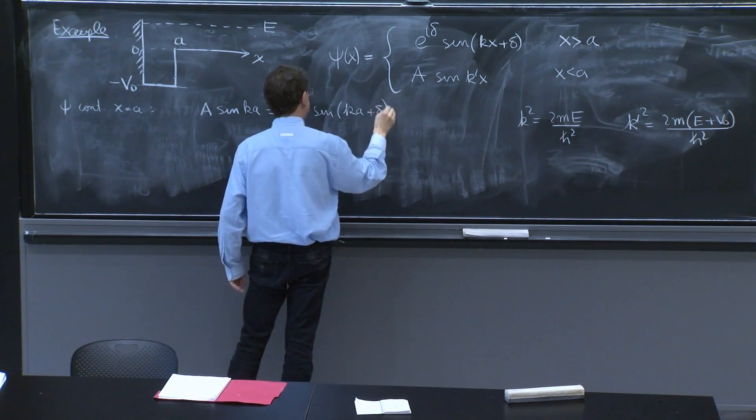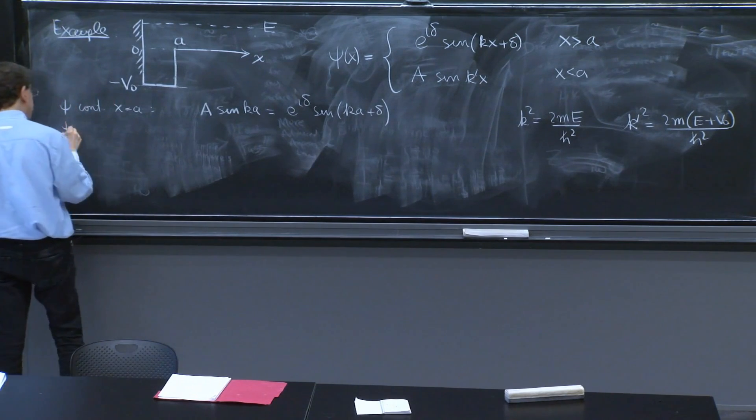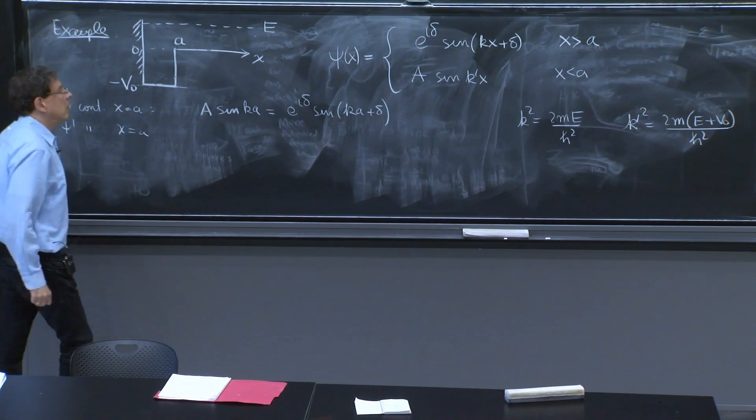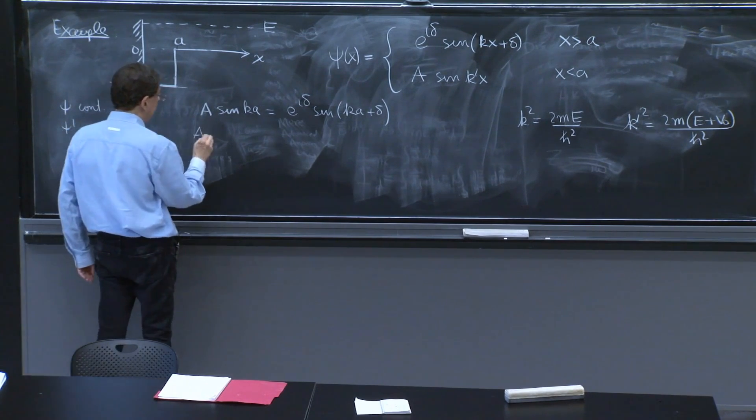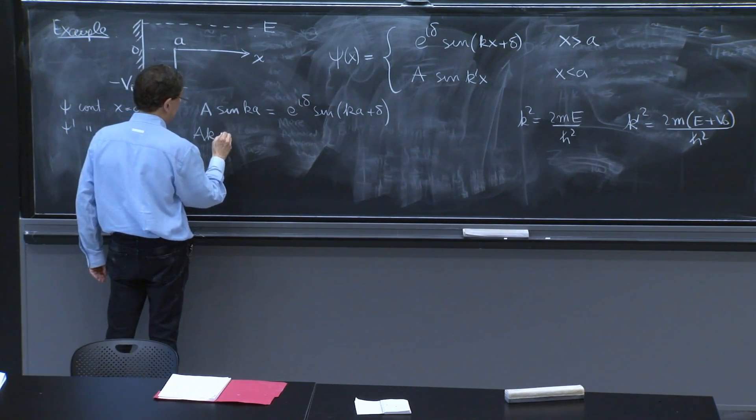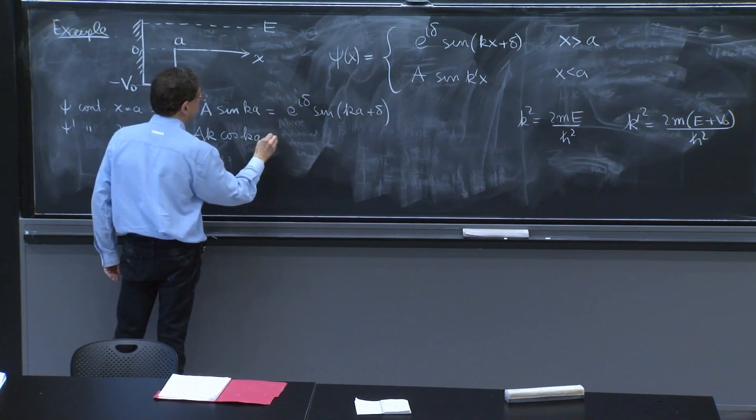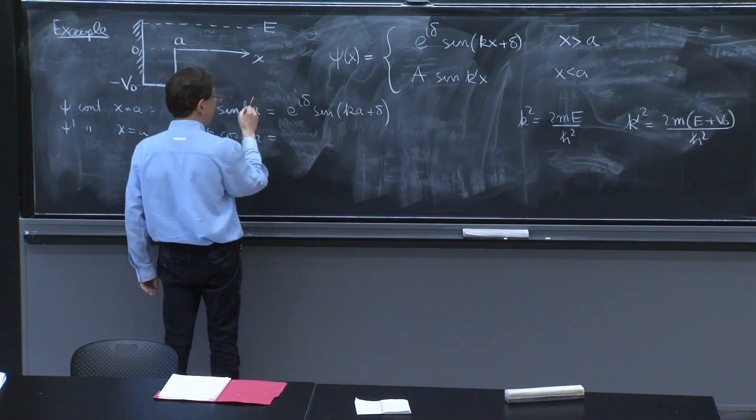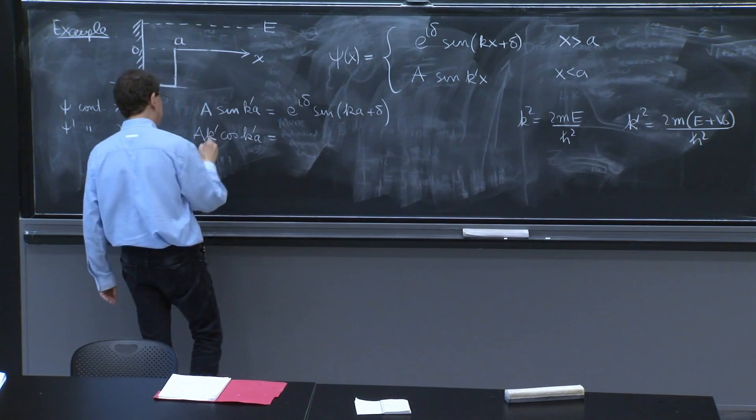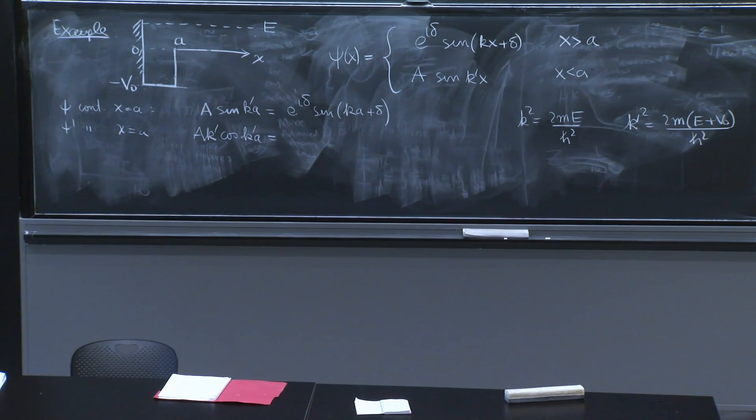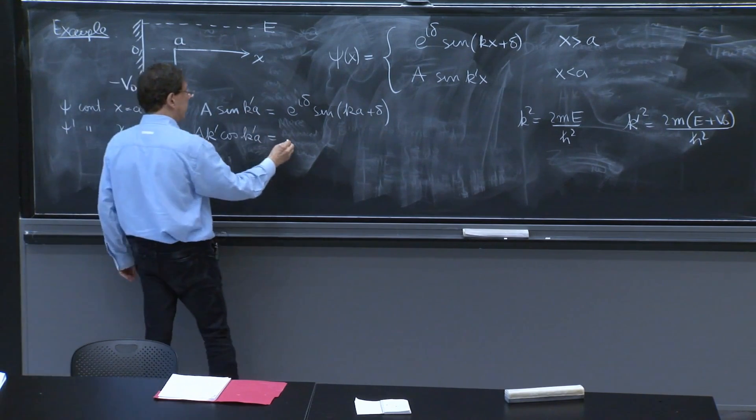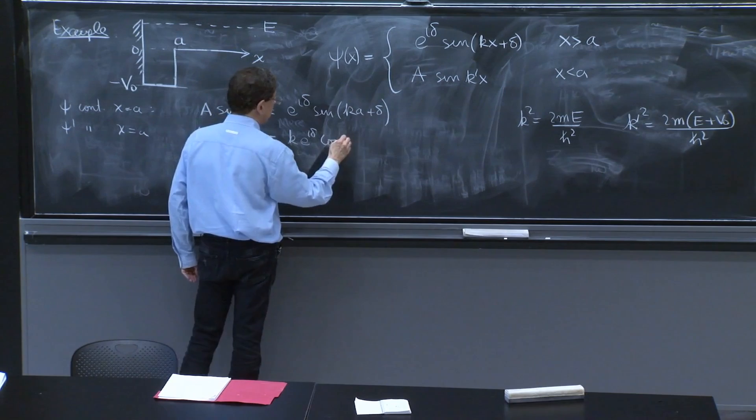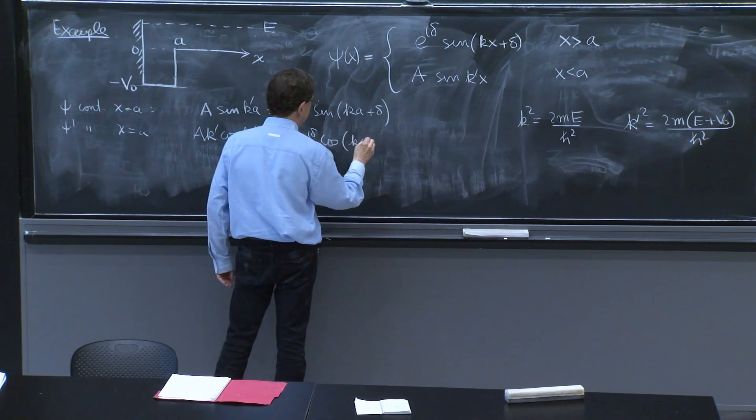And psi prime continuous at x equals a will give me a k prime cosine k prime a equal, I have primes missing, I'm sorry, primes, k prime equals k e to the i delta cosine k a plus delta.